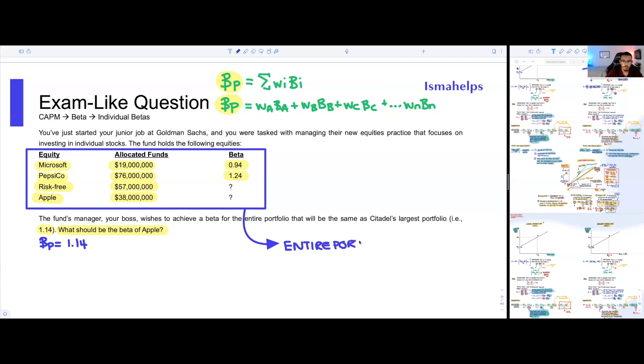Within our portfolio, we obviously have four assets. We have Microsoft, which is one, PepsiCo, which is two, the risk-free, which is three, and Apple, which is four. So if we look at our formula from before, the beta of our portfolio would be equal to the weight of one times beta one plus the weight of two times beta two plus the weight of three times beta three plus the weight of four times beta four. If we play the game of what do we know, we know that we have the beta of our portfolio and we have the beta for Microsoft and the beta of PepsiCo.